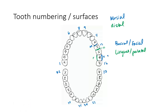Lastly we have the biting surfaces — that's going to be the occlusal or the incisal surface. Occlusal refers to the biting surface for posterior teeth. For anterior teeth, it's going to be the incisal surface. So that covers tooth numbering and surfaces.